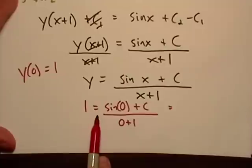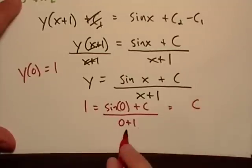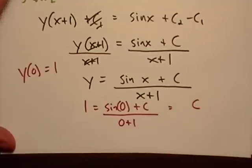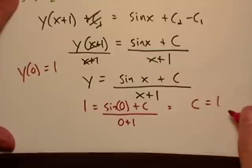So let's see here. What do we have? This would be zero plus c, so that's just c. And down here, that's just one. So it'd be c over one is just c. So it looks like c is actually just equal to one.